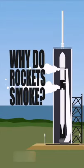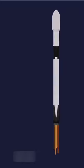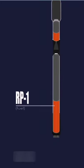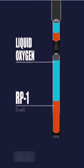Why do rockets smoke before launch? Let's look at SpaceX's Falcon 9 for example. The Falcon 9 uses RP-1 as its fuel and liquid oxygen as its oxidizer.